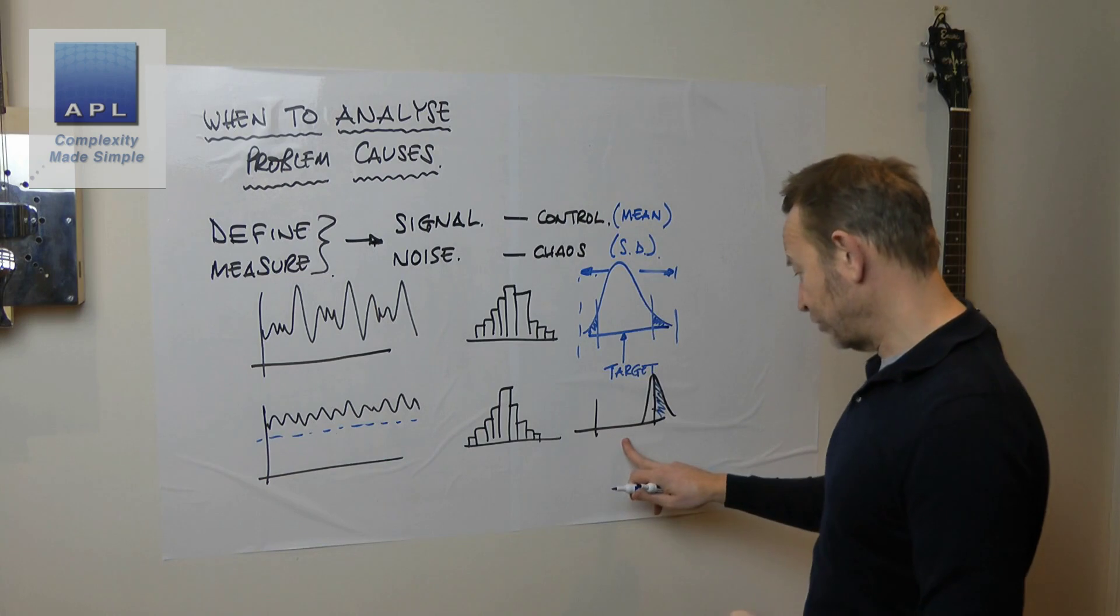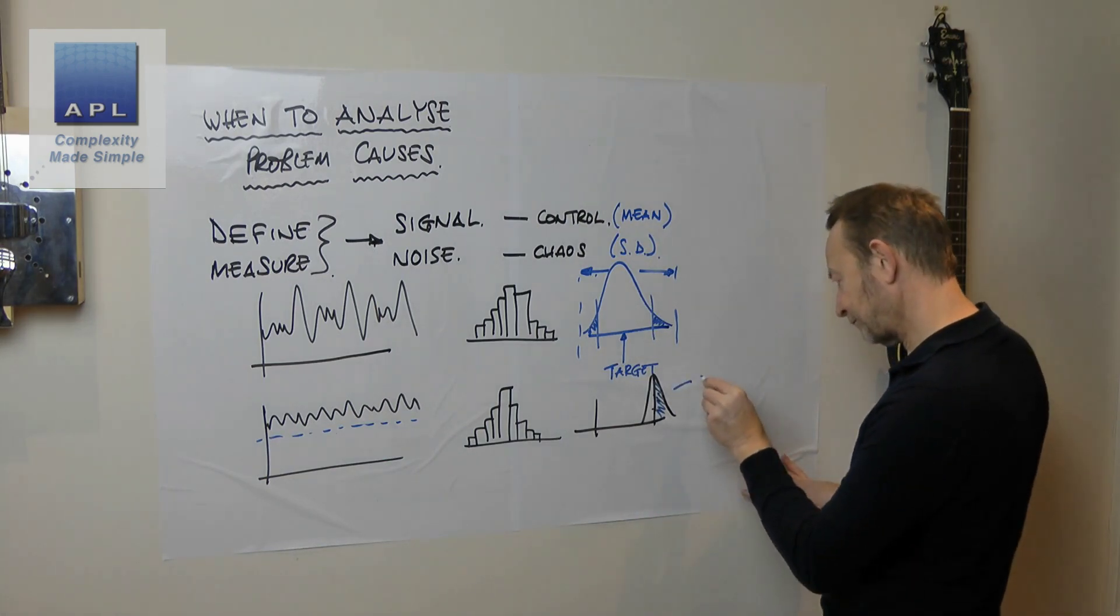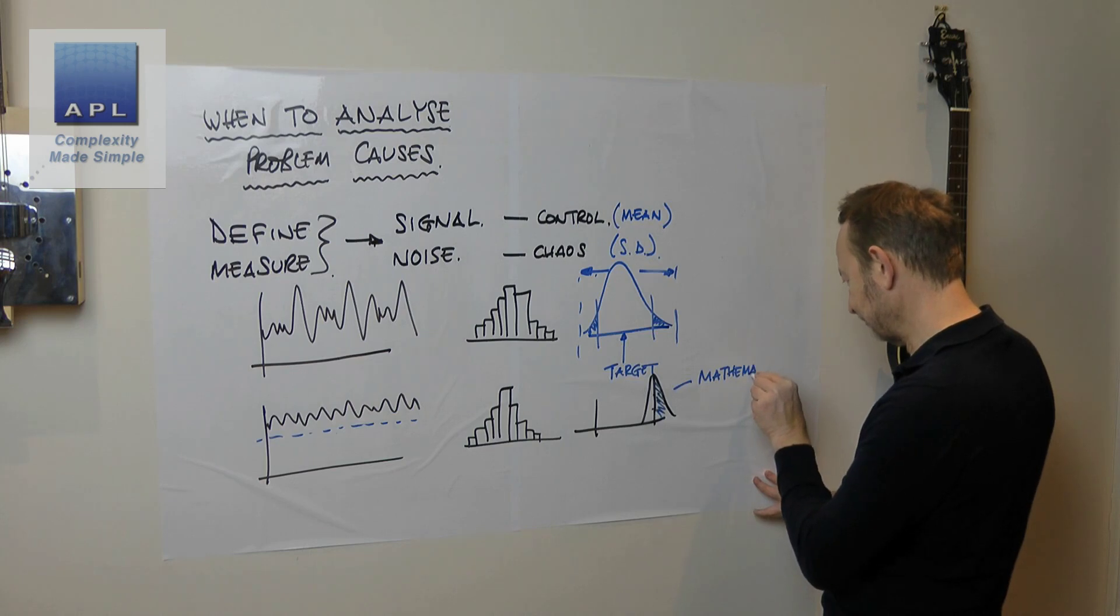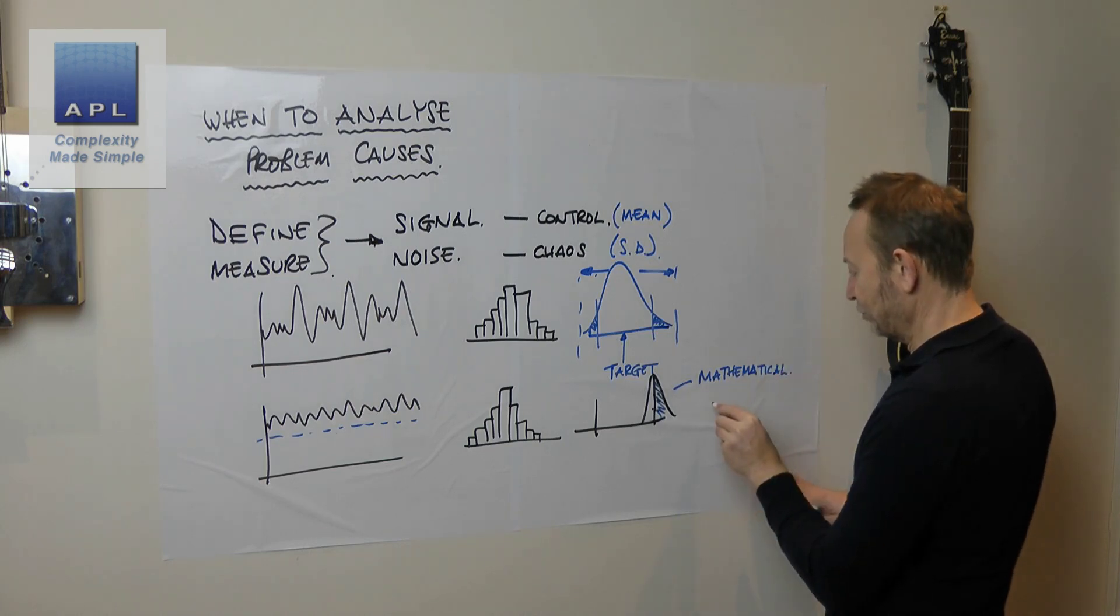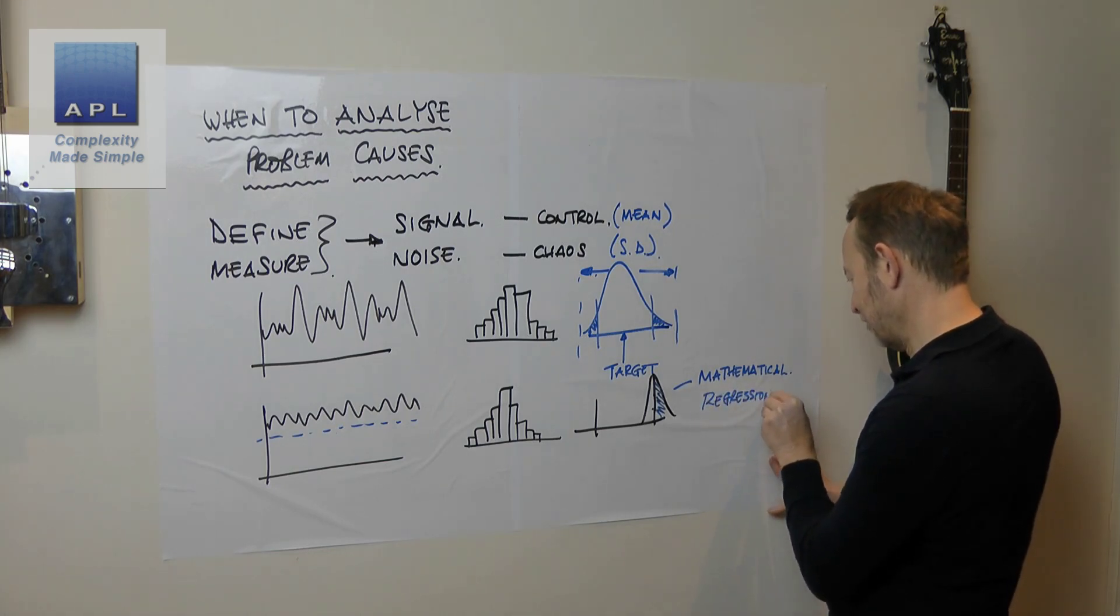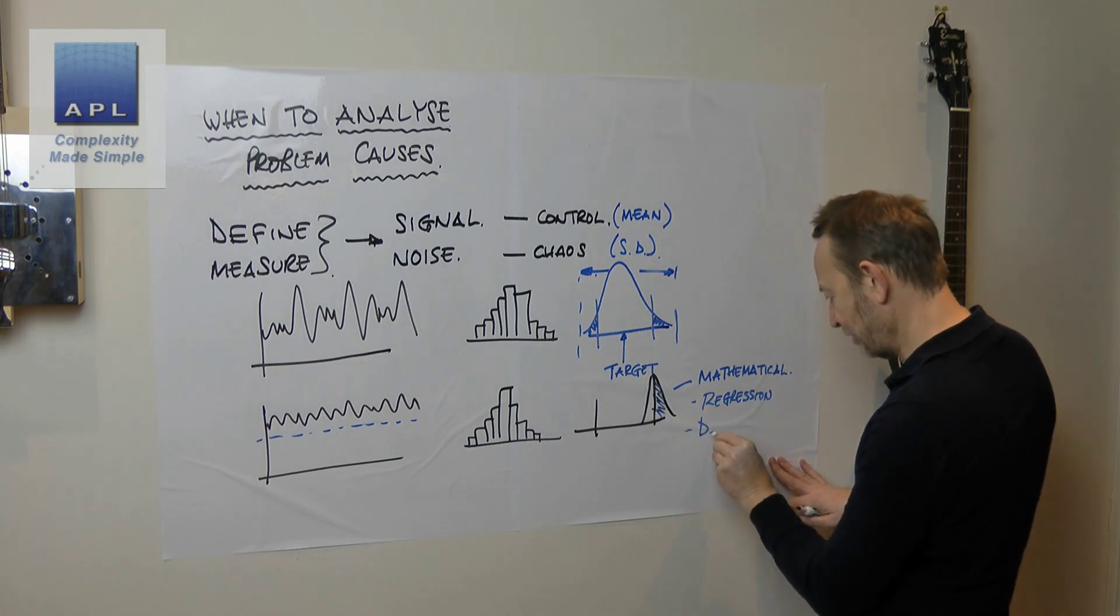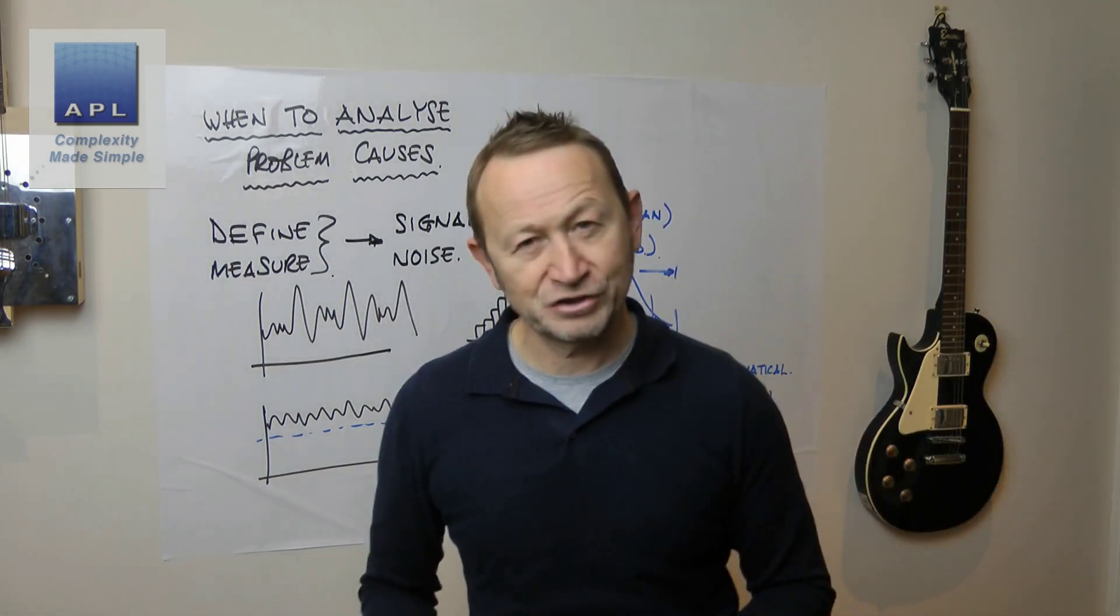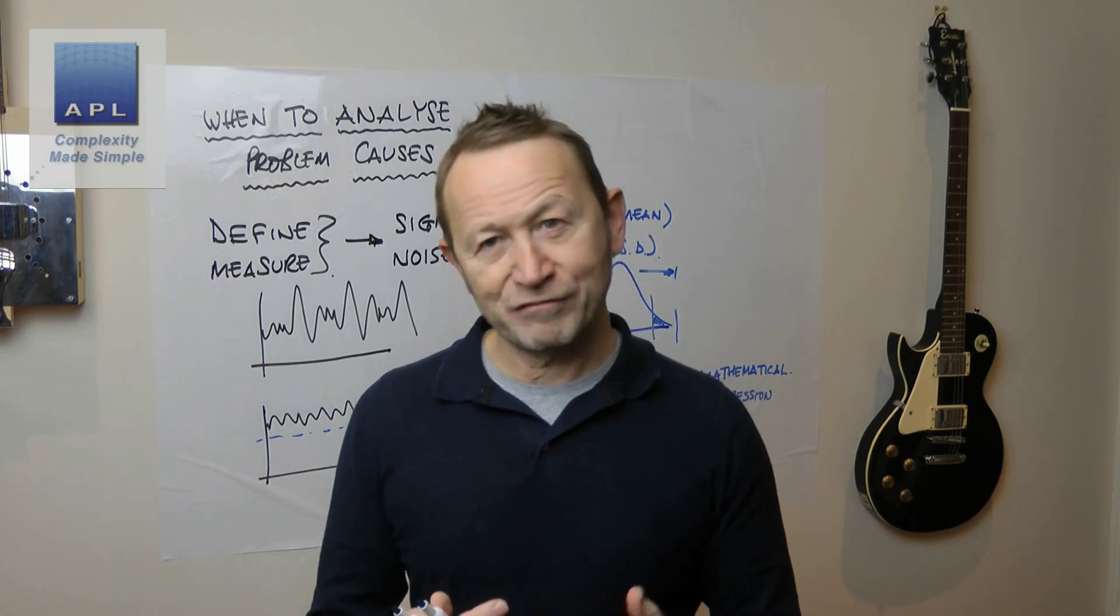And those two techniques are very different. If you're trying to move the signal, this technique to understand this potentially is going to be quite mathematical. So you're going to be looking possibly at regression information. You might consider doing a design of experiments in order to understand how to move that average around.